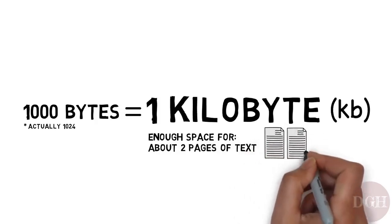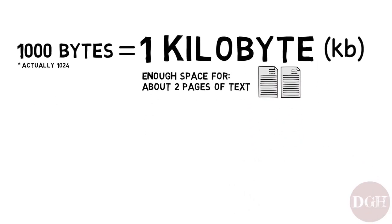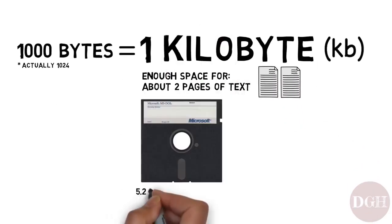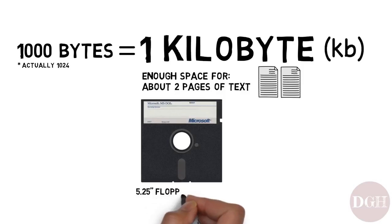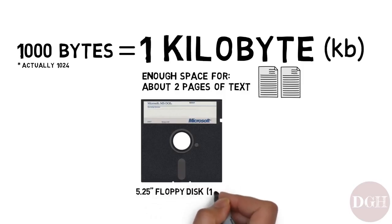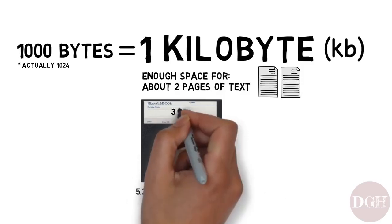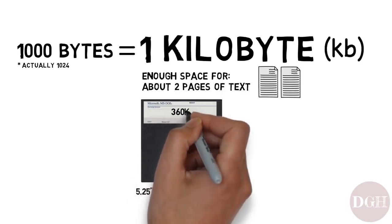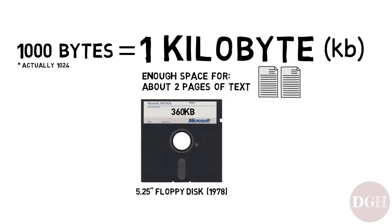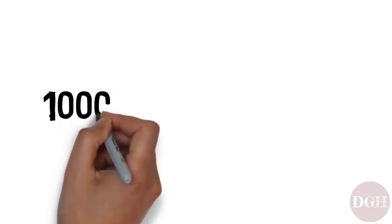Back in the late 1970s and early 1980s, the five-and-a-quarter-inch floppy disk was a popular storage option. It could hold 360 kilobytes of information.